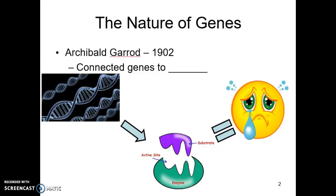To get us started, we want to take a look at the history of genes and understanding how this knowledge came to be. Today we often just take for granted that we know this and we know that, but a lot of this information was built off of a history of scientists working on these ideas. And in the big picture of science, our understanding of genes and how they work is fairly limited because it's a fairly recent field.